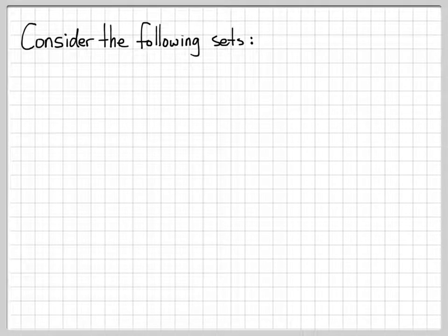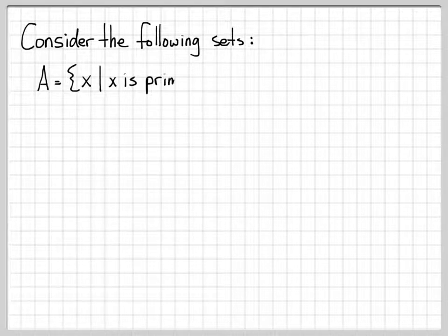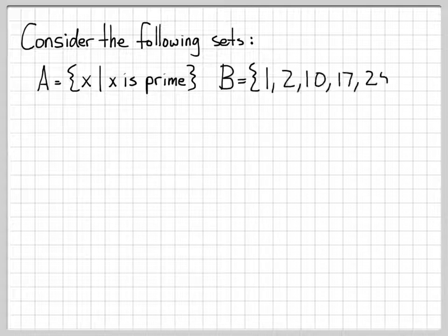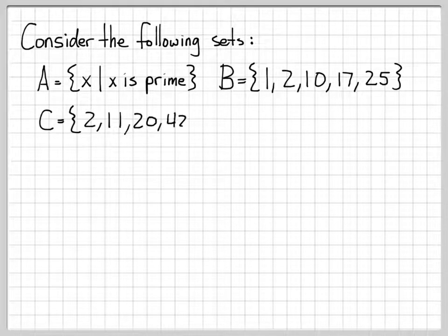In this example, we're going to get a little practice working with some of the set operations. The sets we're going to work with are: set A, which is the set of all prime numbers — all x such that x is prime; set B, which consists of the elements 1, 2, 10, 17, and 25; and set C, which consists of the elements 2, 11, 20, and 42.